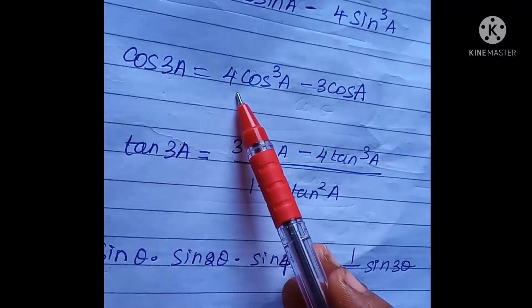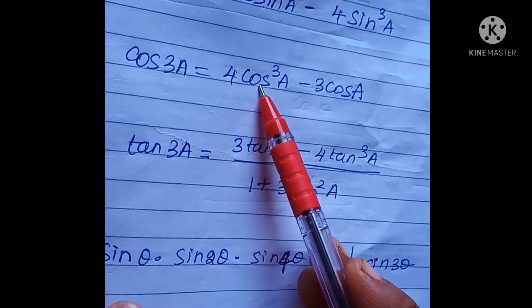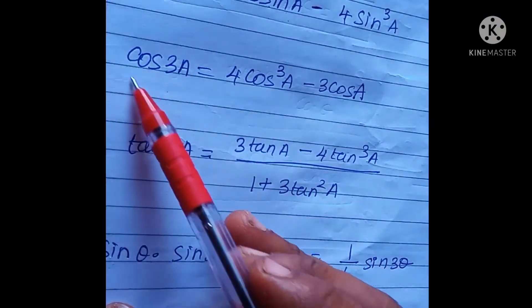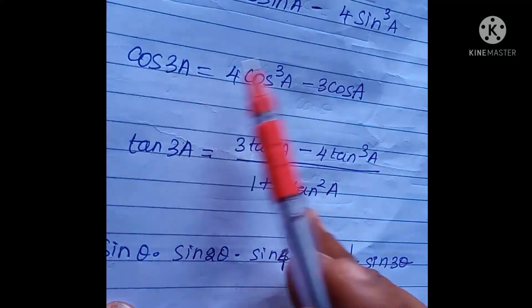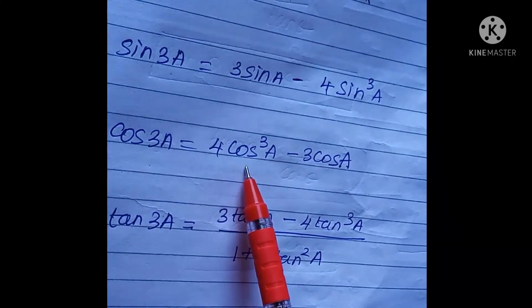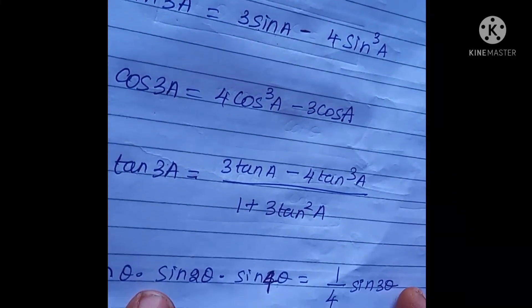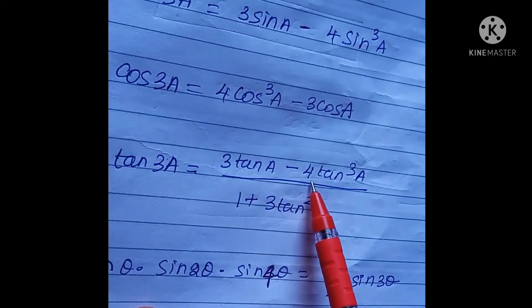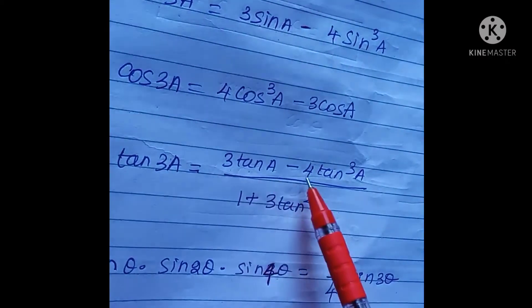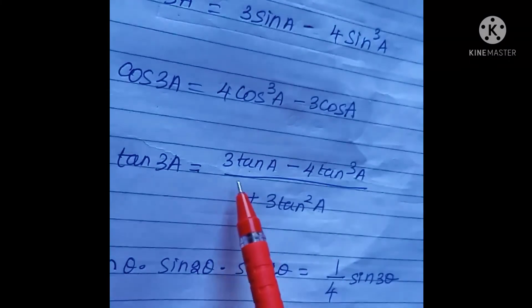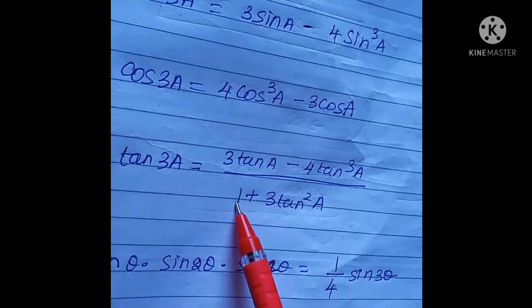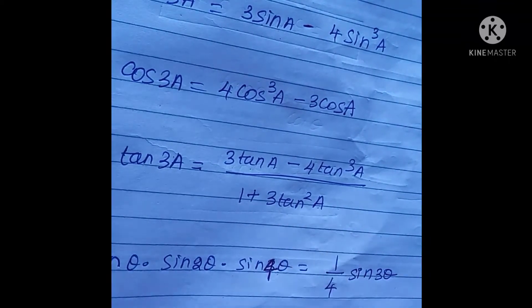Similarly, cos3A = 4cos³A − 3cosA. And tan3A = (3tanA − tan³A) divided by (1 − 3tan²A).